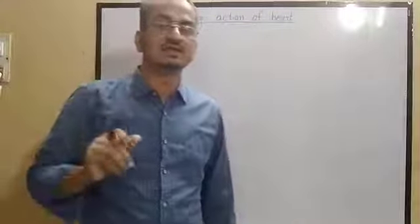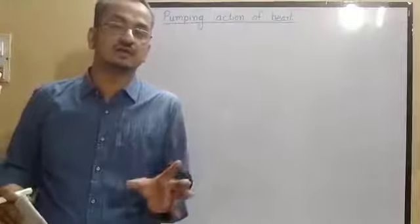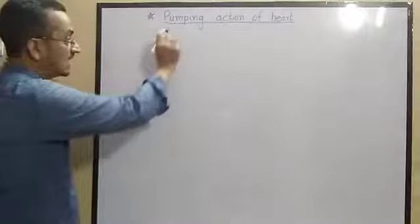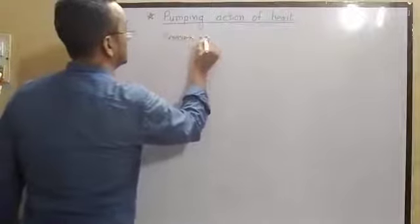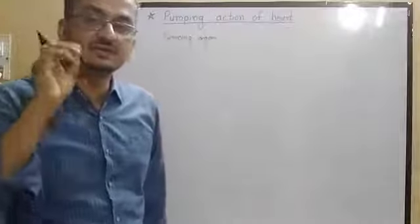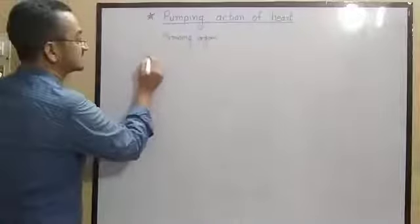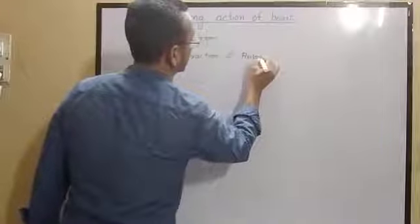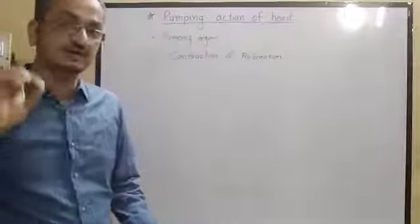The next side heading in the same lecture on respiration and circulation is the pumping action of the heart. Today we will see how the human heart works — how it pumps blood and how blood is distributed throughout the body. The heart is mainly a pumping organ, responsible for rhythmic contraction and relaxation with the help of cardiac muscle.